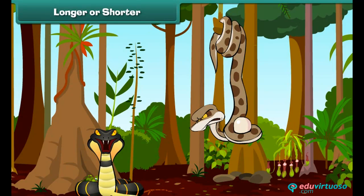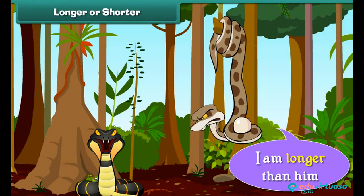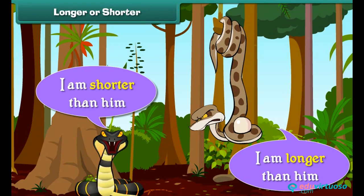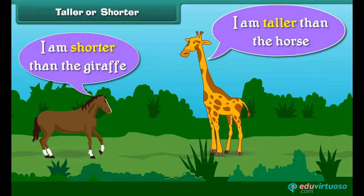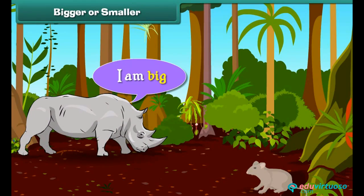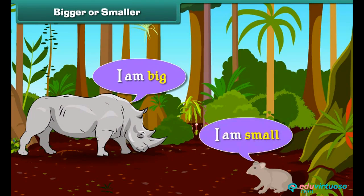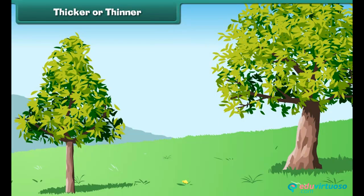When two objects are not of the same size, we compare them. I am longer than he is. I am shorter than him. I am taller than the horse. I am shorter than the giraffe. I am big. I am small.